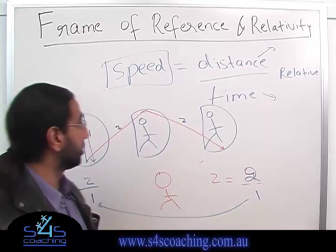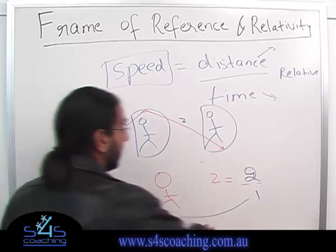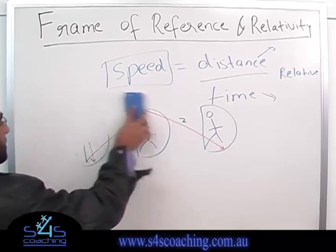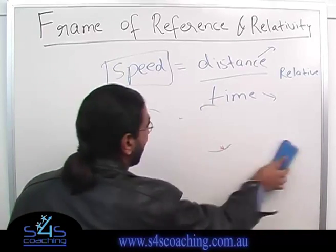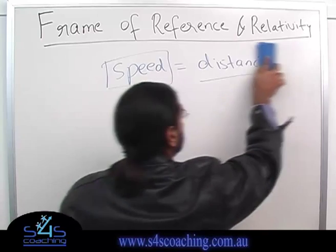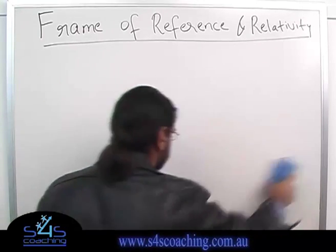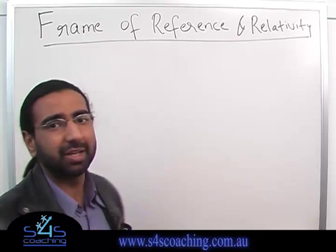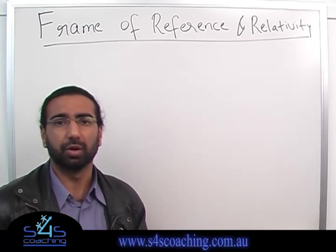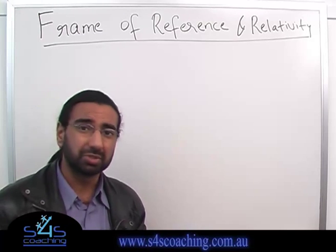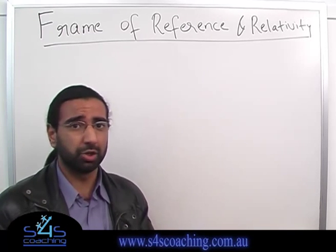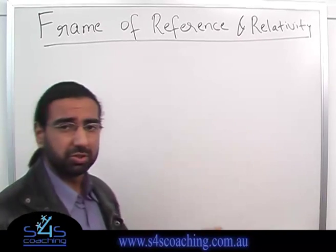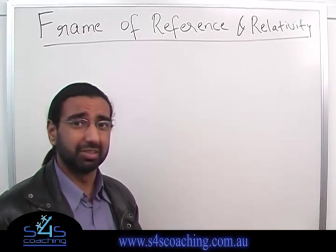The third interesting consequence of Einstein's theory of relativity is something called mass dilation. What that means is the mass of a moving object actually increases. Now, this kind of contradicts what we have learned previously. We thought mass to always be the same — mass is the amount of matter that a substance has — and that should not be changing according to Newtonian physics. But one of the consequences of relativity is that mass itself changes.